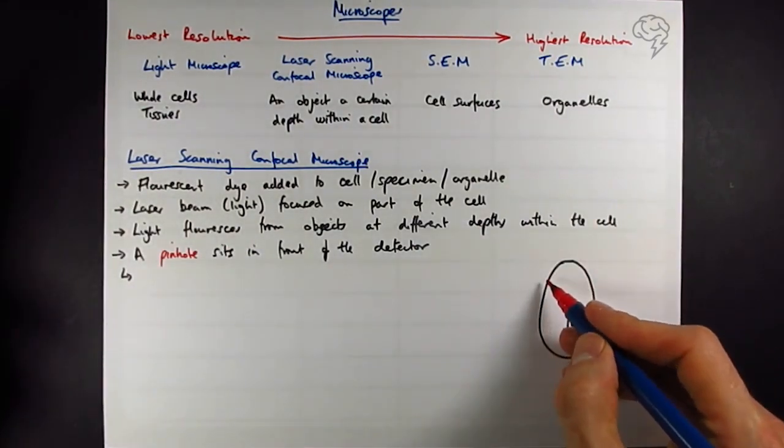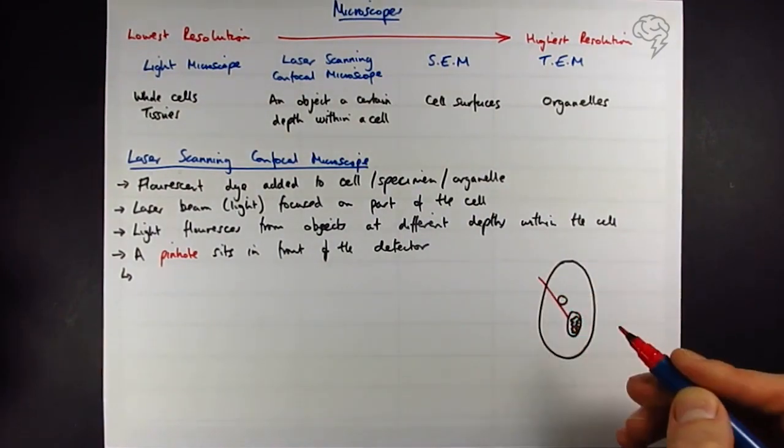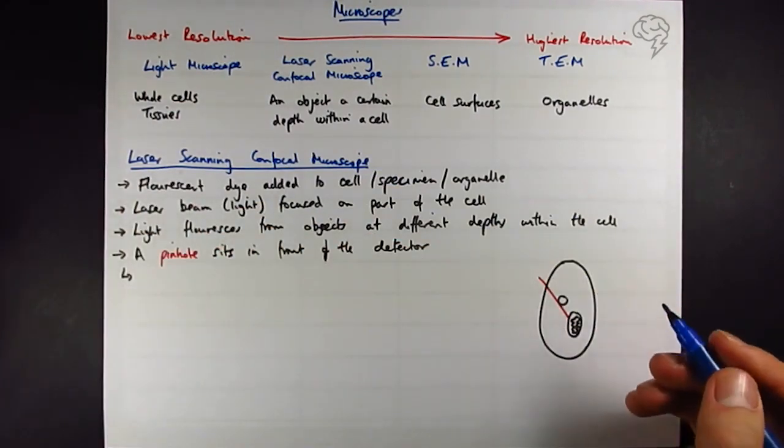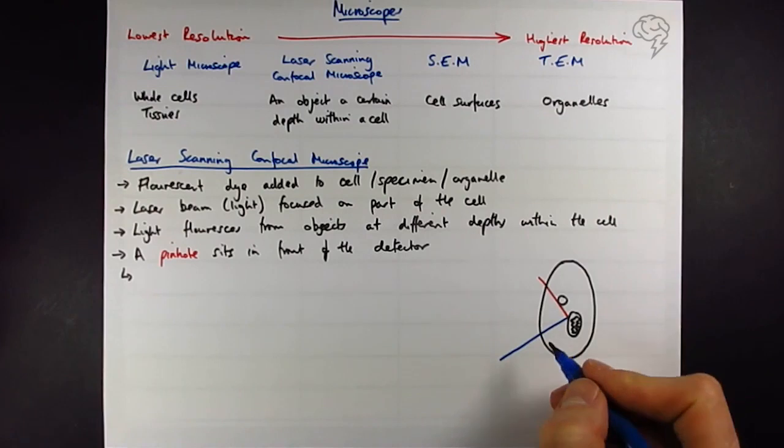Our laser beam is going to come in, it's going to strike both of these things, just about. And that's going to cause them to fluoresce if they've absorbed the dye. But let's say they've both absorbed this dye and it's going to then shine out this light.